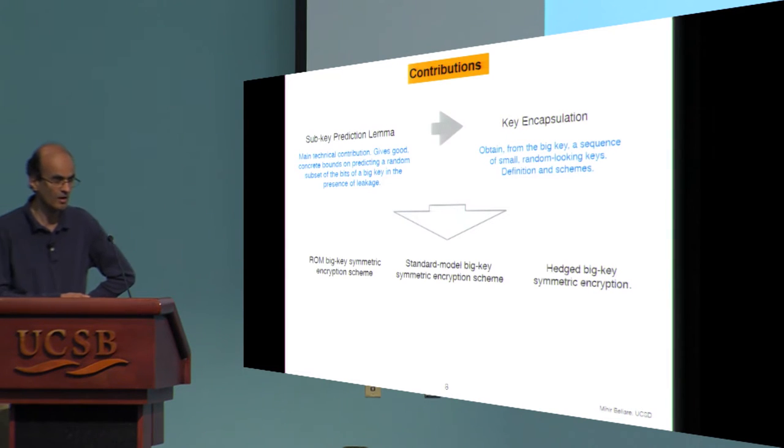So roughly what we did then is we gave a general lemma, information theoretic lemma, on a problem called sub-key prediction, which asks how hard it is for an adversary, if given leakage on a big key, to say what are a small number of random bit positions in that key. From that, we can build a key encapsulation scheme, which shows how you get small random looking keys out of a big key, and then we can get symmetric encryption in the bounded retrieval model.